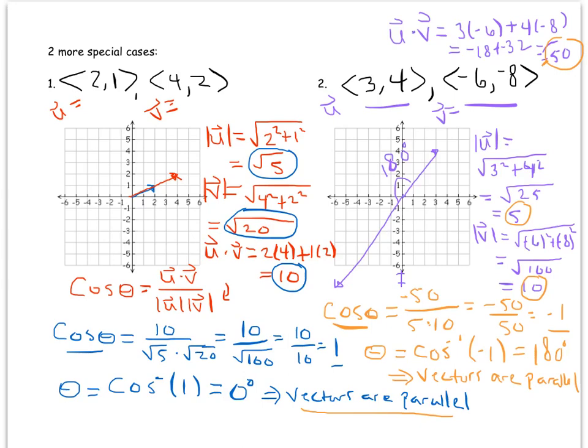Pay attention to the wording of questions. If asked what the angle between two vectors is, you'd say 0 degrees or 180 degrees. But if asked whether the vectors are perpendicular, parallel, or neither — and you get one of these two cases — you simply say the word 'parallel.' Slightly different wording, so make sure you pay attention to that detail.